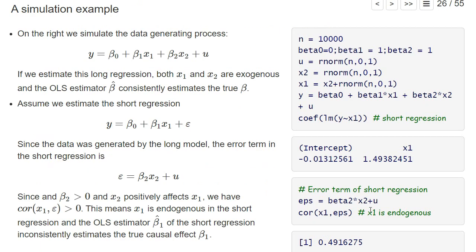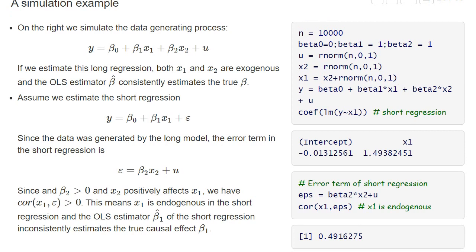We can verify this with the simulated data: we find a positive correlation between x_1 and epsilon. Estimating the short regression confirms a positive bias — the coefficient on x_1, beta_1_hat, is 1.49, which is larger than the true causal effect of beta_1 equal to one.